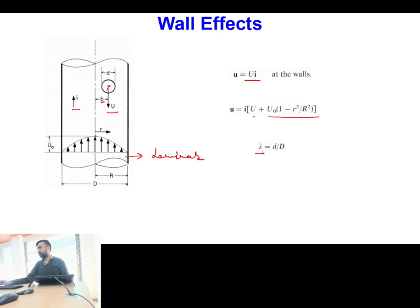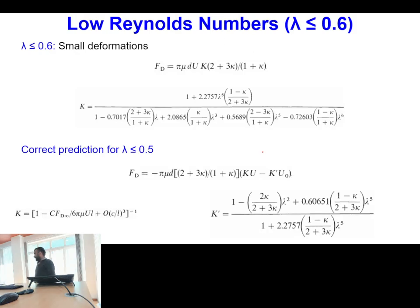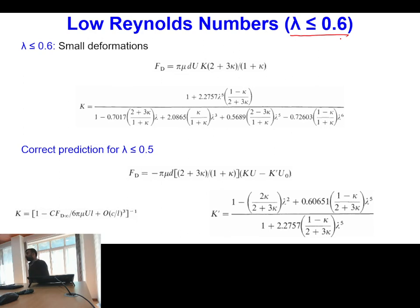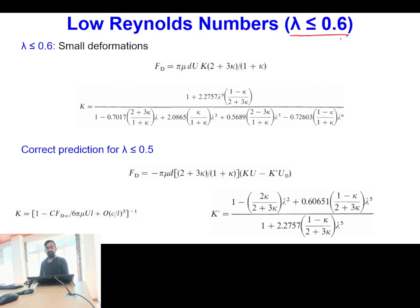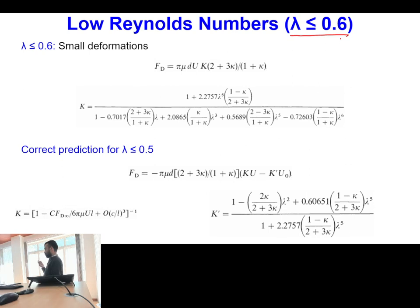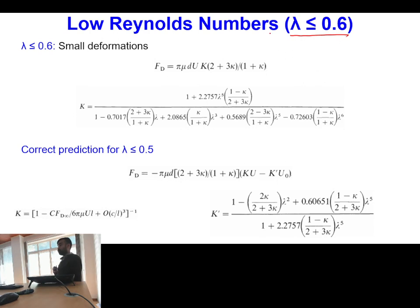That discussion covered rigid particles. Now we look at fluid particles in wall-confined flows. We divide the system into two sub-parts: first, where lambda (the confinement ratio) is less than or equal to 0.6, and second, where lambda is greater than 0.6. When lambda is less than 0.6, we can have different flow conditions — low Reynolds number, intermediate Reynolds number, or high Reynolds number — but in all these cases lambda remains less than or equal to 0.6.